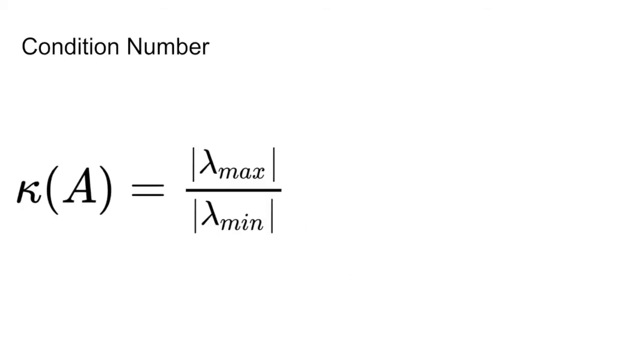First, we will talk about condition number. We can define the condition number of a matrix as the ratio between the max eigenvalue and min eigenvalue of that matrix.